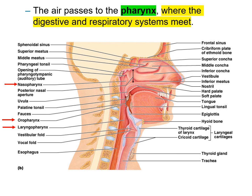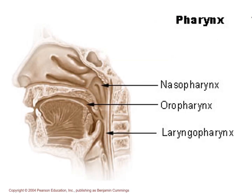The air passes to the pharynx, where the digestive and respiratory systems meet. The pharynx is made up of three parts: the nasal pharynx, the oral pharynx, and the laryngopharynx. Coming from the nose is the nasal pharynx and from the mouth is the oral pharynx; as they go posteriorly and downward, they join into the laryngopharynx.